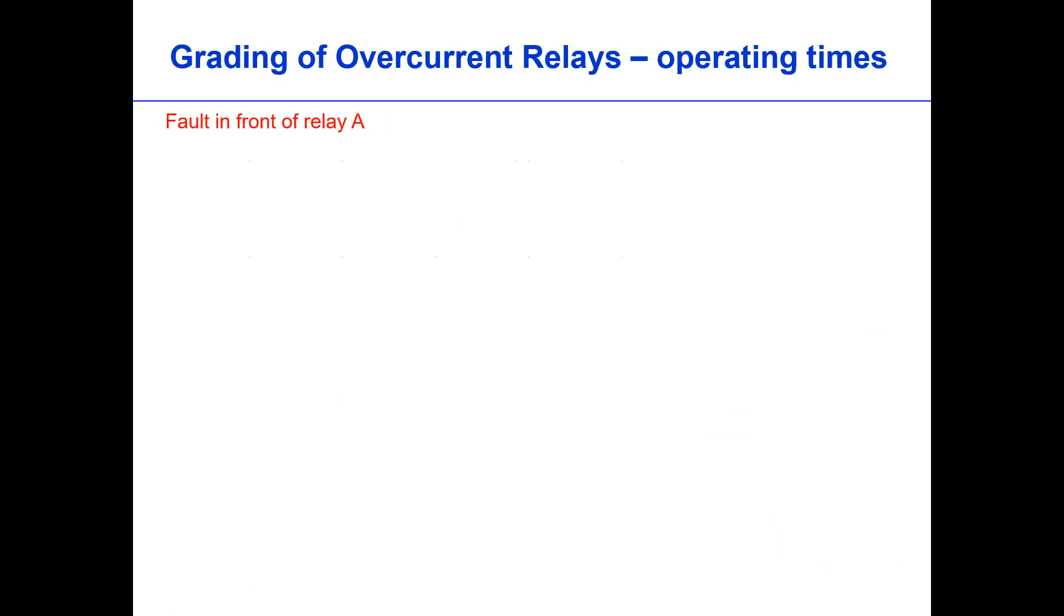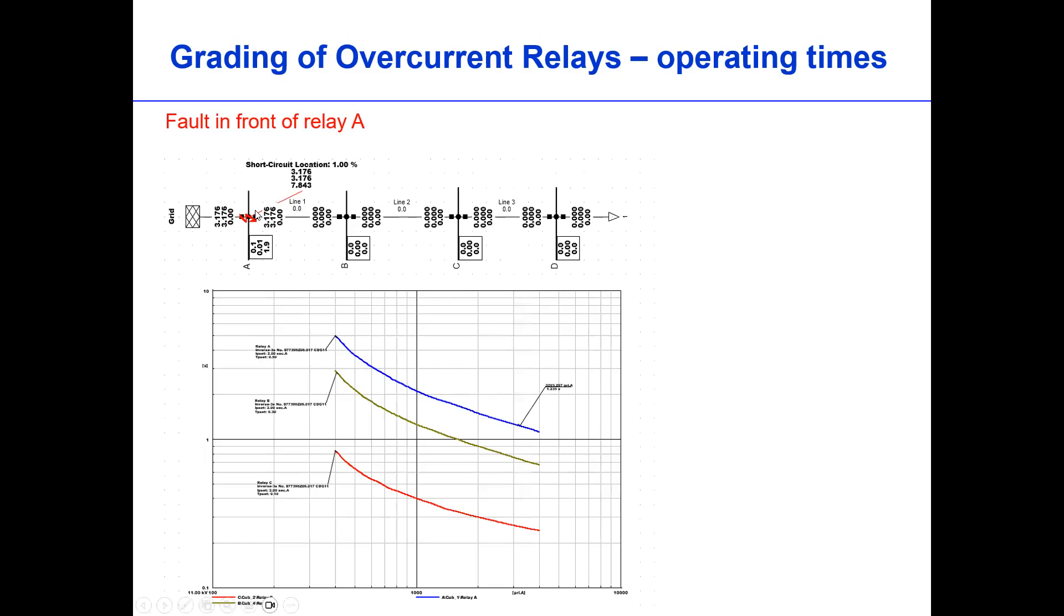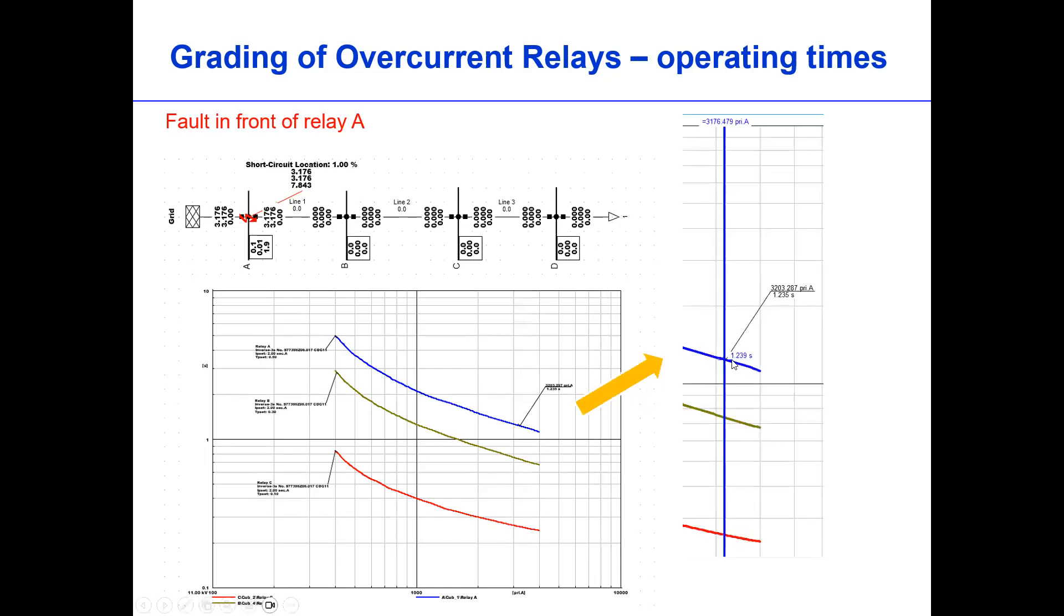So what about for relay A? Well, in this case, the fault is just near the generator. Only the relay near the fault trips, which is relay A, at 1.23 second. Relay C and B are not tripped. That is the only disadvantage of overcurrent relay grading. For the last fault magnitude, the trip time is longer. It takes 1.2 seconds, and there is no backup for this one.